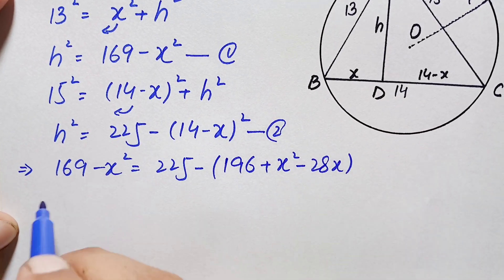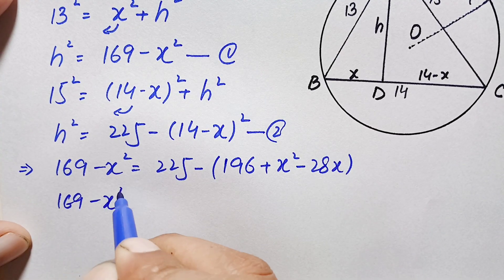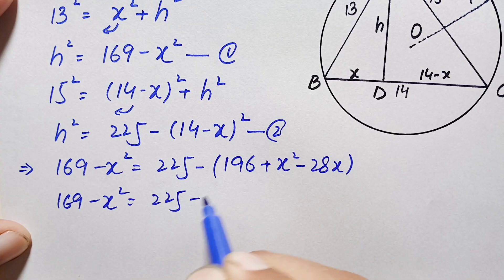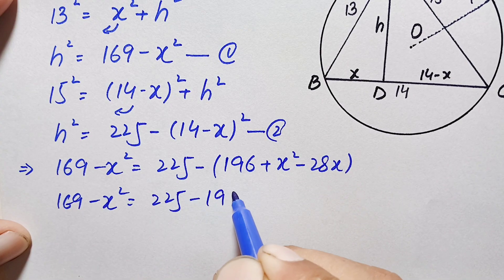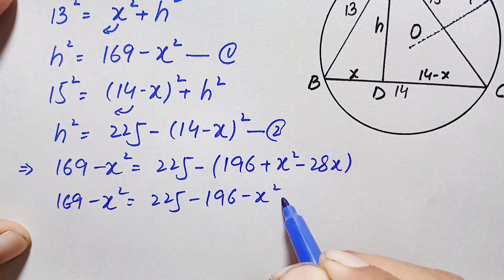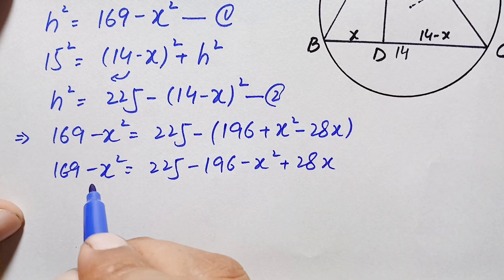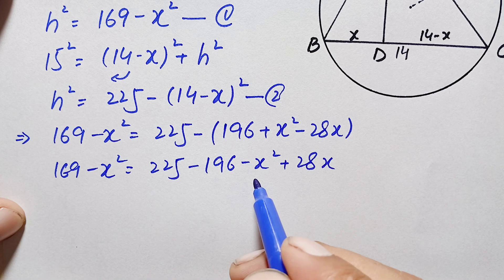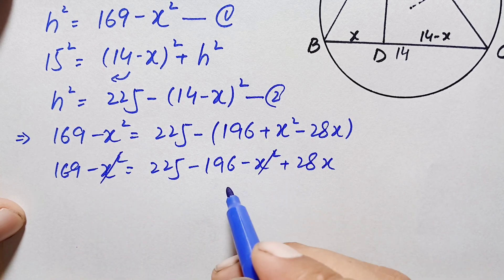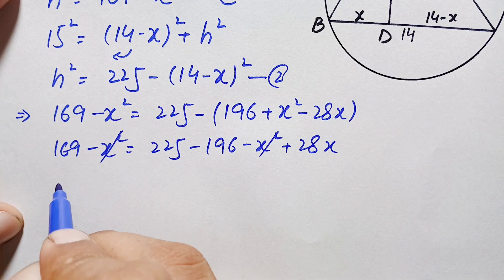Multiplying the negative sign through the parenthesis, this becomes: 169 − x² = 225 − 196 − x² + 28x. There is a negative x² on both sides of the equation, so we can cancel them by adding positive x² to both sides. This simplifies to: 169 = 29 + 28x.